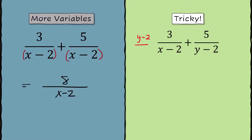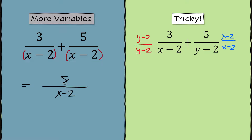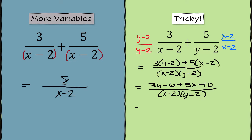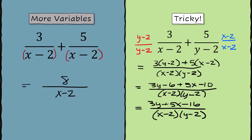The x minus 2 fraction needs to be multiplied by y minus 2 over y minus 2, so you're not changing the value — the thing in red is actually equal to 1. Do the same on the other side: multiply that fraction by x minus 2 over x minus 2. Both fractions now have a denominator of x minus 2 times y minus 2. For the numerators, use the distributive property: 3 times the quantity y minus 2, plus 5 times the quantity x minus 2. Multiply everything through, and since you can't combine the x's and y's, we end up with 3y plus 5x minus 16.